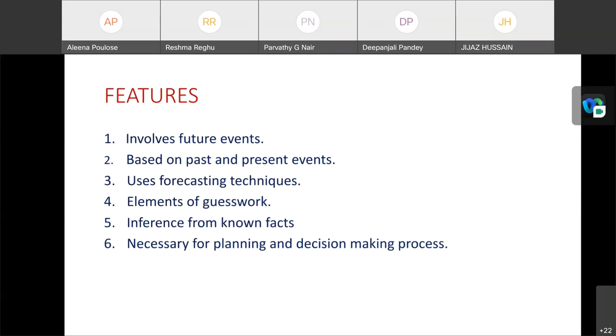Next, we will look into the features of forecasting. First feature is it involves future events. As forecasting is the prediction of future values based on past and present data, it involves the future events. Second, it is based on past and present events. Third, it uses the forecasting techniques. Fourth, it's element of guesswork as we are guessing what will happen in the future. Fifth one is inference from known facts. And sixth one is necessary for planning and decision making process.